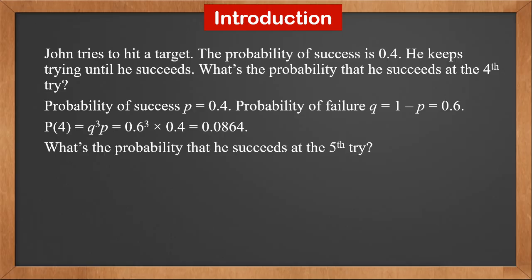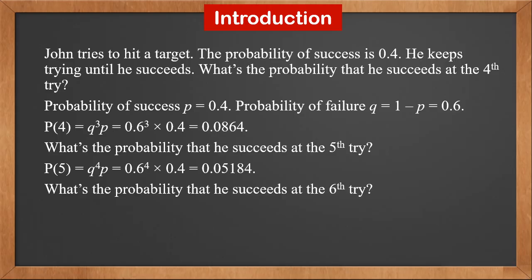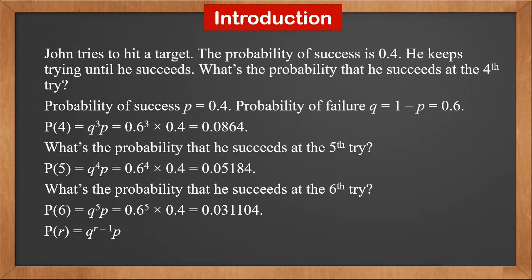What's the probability that he succeeds at the 5th try? If he succeeds at the 5th try, the first 4 times are all failures. So p5 is q to the power 4 times p. Similarly, p6 is q to the power 5 times p. And the probability that he succeeds at the rth try, p_r, is q to the power r minus 1 times p.